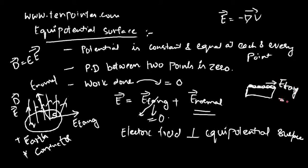Since E-tangential is zero, what happens to the normal component? The normal component still exists. That is why we say the electric field is perpendicular to the conductor surface. This behavior is similar to that of an equipotential surface, where the electric field is perpendicular to the surface. So a conductor behaves like an equipotential surface, but only for static fields.